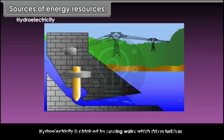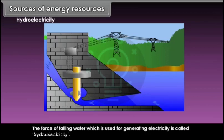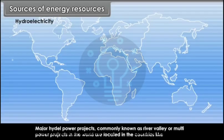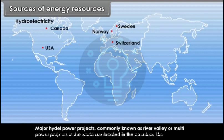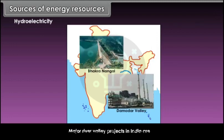Hydroelectricity is obtained by running water which drives turbines. The force of falling water used for generating electricity is called hydroelectricity. Major hydropower projects in the world are located in countries like Sweden, Norway, Switzerland, Canada and the USA. Major river valley projects in India are Bhakra Nangal and Damodar Valley Corporation, which produce hydroelectricity.